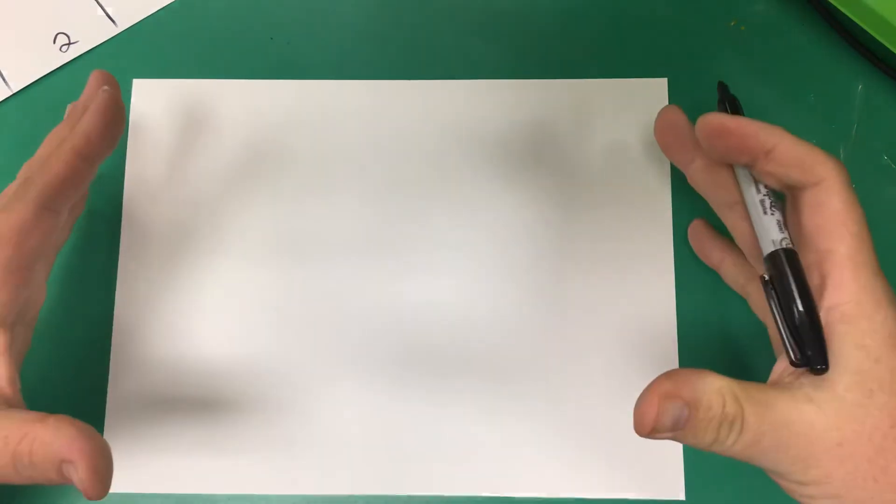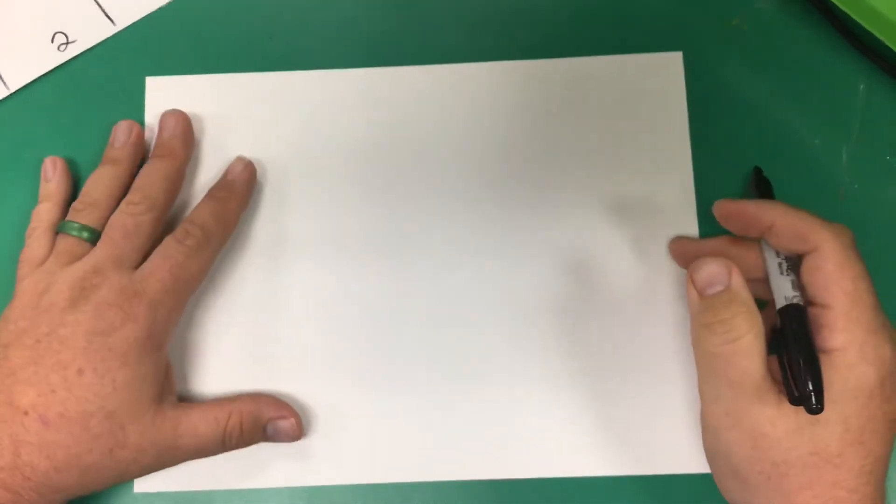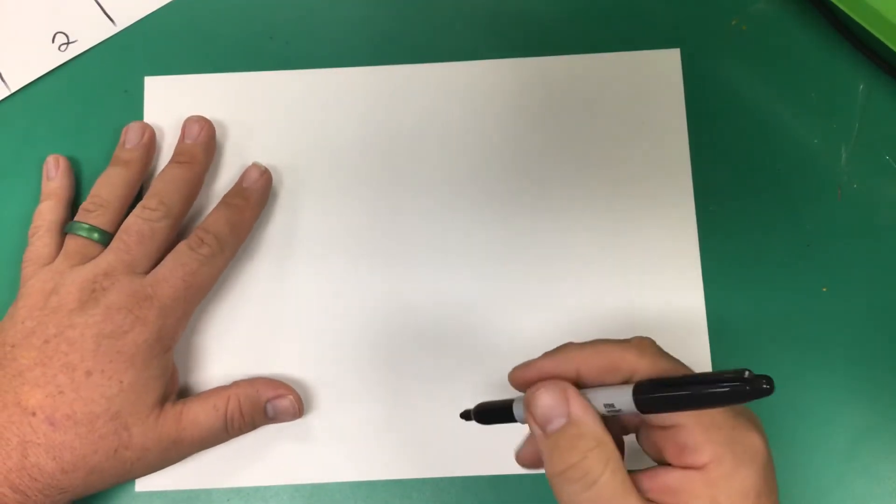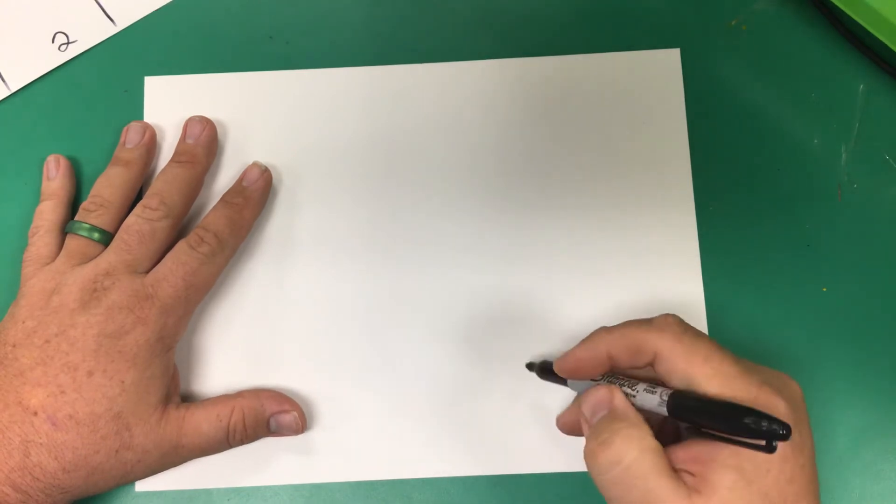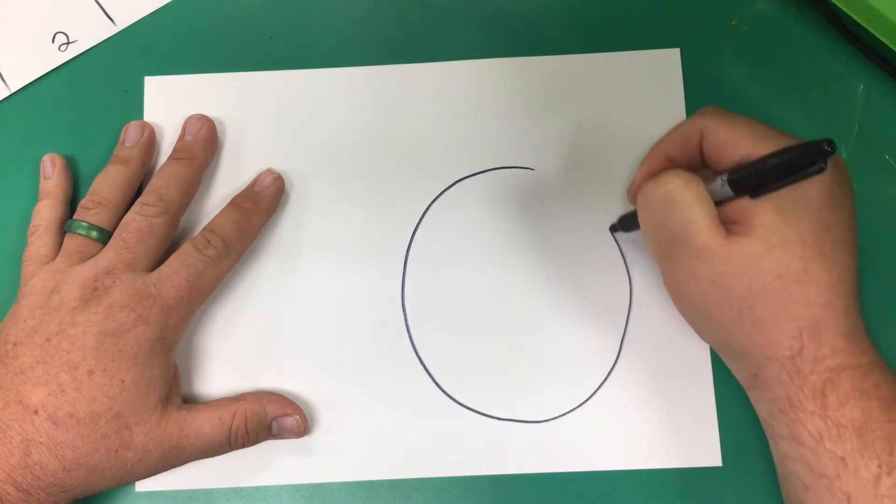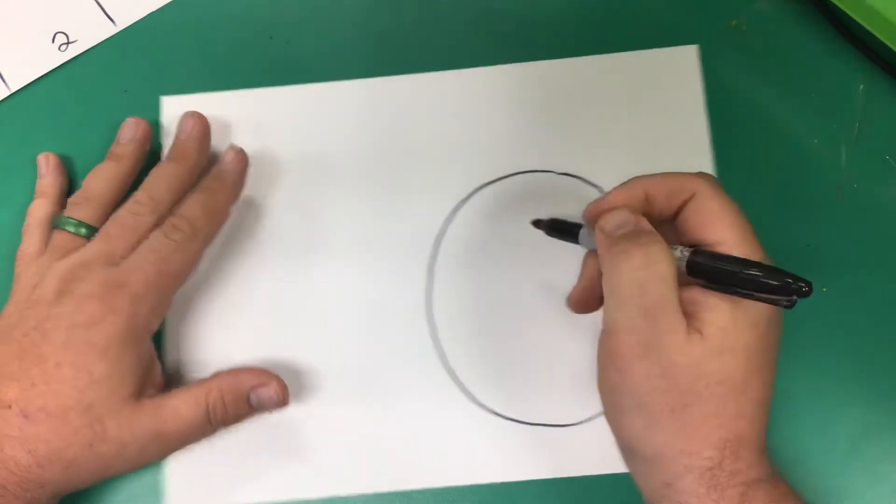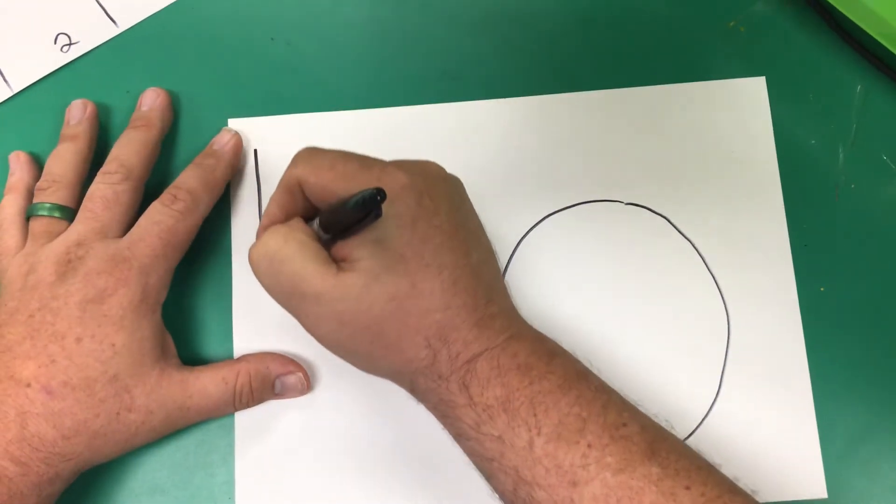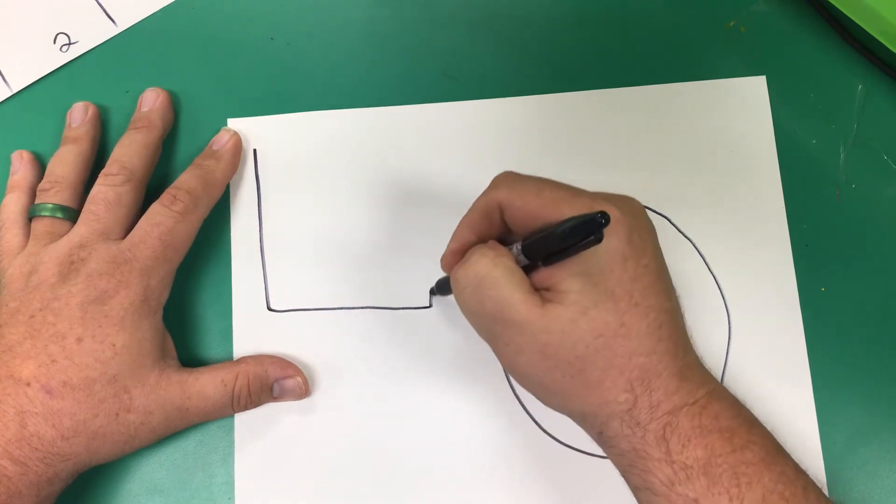Now, we want to fill up our paper. This is going to be kind of like an abstract work of art. So I'm going to start with a circle. I like circles. I also like squares. So I'm going to do a circle and a square.